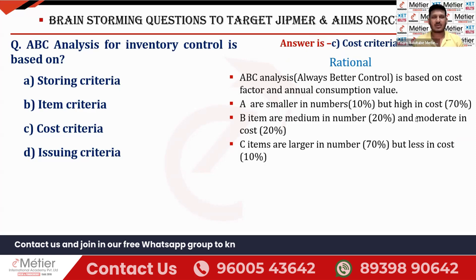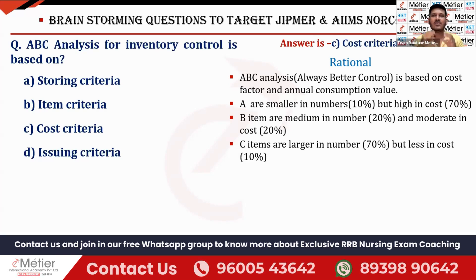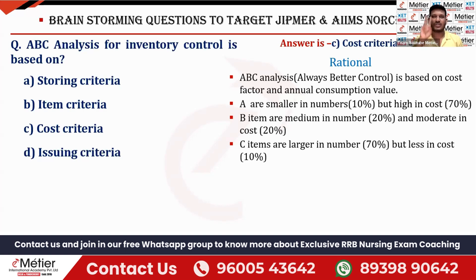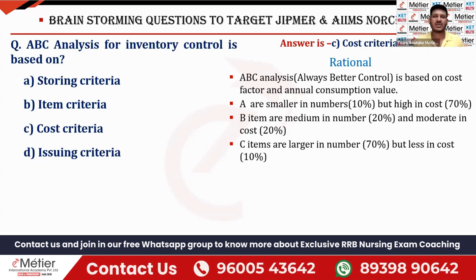ABC Analysis means Always Better Control — that is the full abbreviation. Two things are important: cost criteria is the first one, and annual consumption is the second. On what basis are we classifying this ABC? That is what we are going to see now.